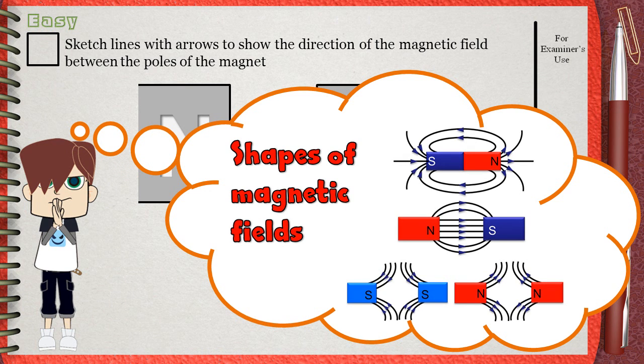Number one: for a bar magnet. Number two: for opposite poles facing each other. Number three: for similar poles facing each other.